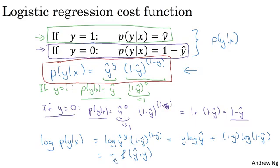And there's a negative sign there because usually if you're training a learning algorithm, you want to make probabilities large, whereas in logistic regression we're expressing this as wanting to minimize the loss function. So minimizing the loss corresponds to maximizing the log of the probability. So this is what the loss function on a single example looks like.